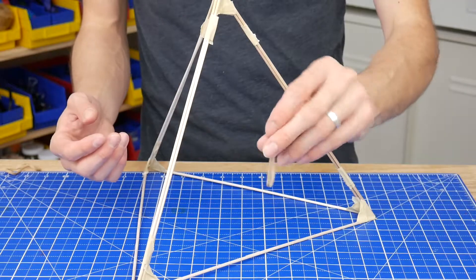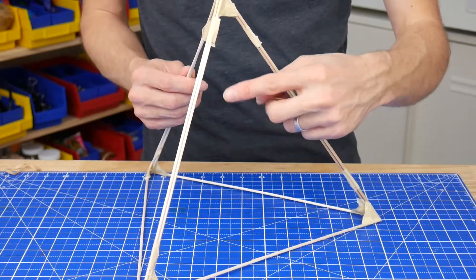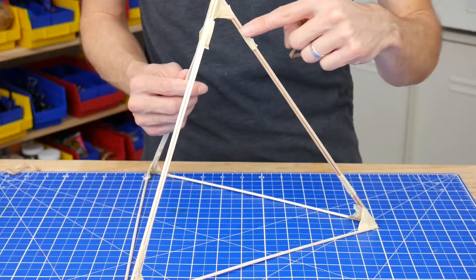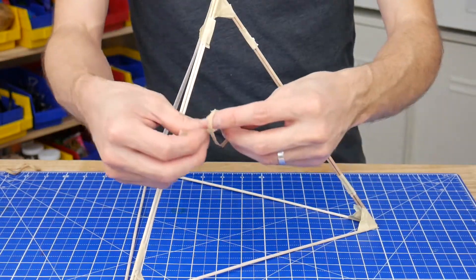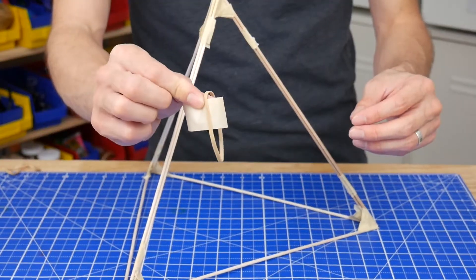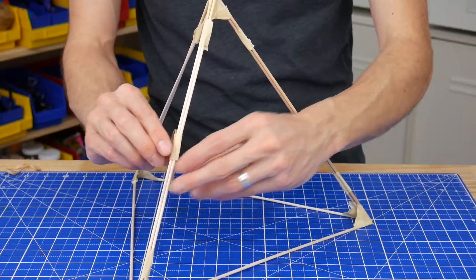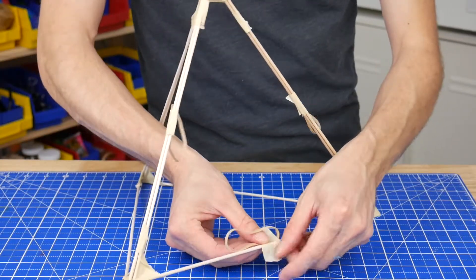Now we're going to tape on three rubber bands, and each one is going to get taped onto the centers of the beams for one triangle. The easiest way to do this is to put the tape into the rubber band first, and then wrap that tape around one of the beams. Repeat for all three sides.